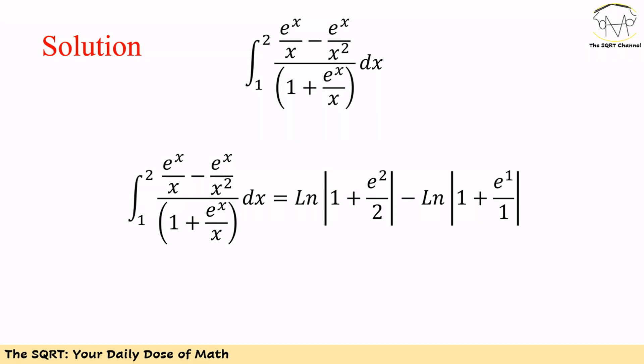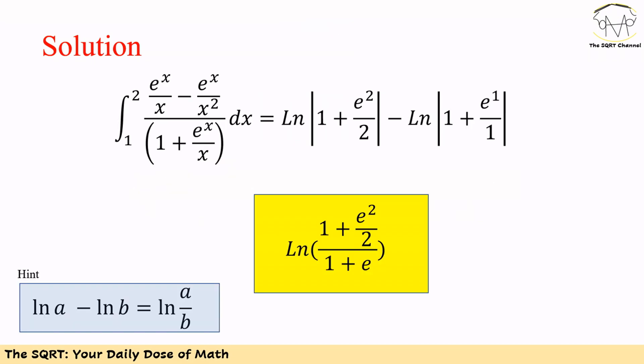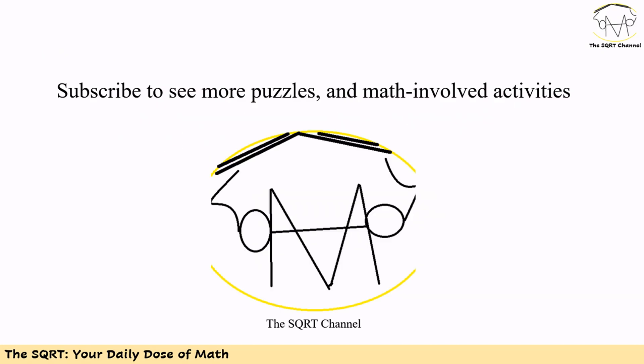Now let's go back to the definite integral. Based on what we saw, the answer is going to be ln(1 plus e squared over 2) minus ln(1 plus e). Since 1 plus e and 1 plus e squared over 2 are both positive, we can remove the absolute value signs. Using ln(a) minus ln(b) equals ln(a over b), our final answer is ln of (1 plus e squared over 2) over (1 plus e). Thanks for watching. If you would like to see more puzzles and math-involved activities, please subscribe to the channel.